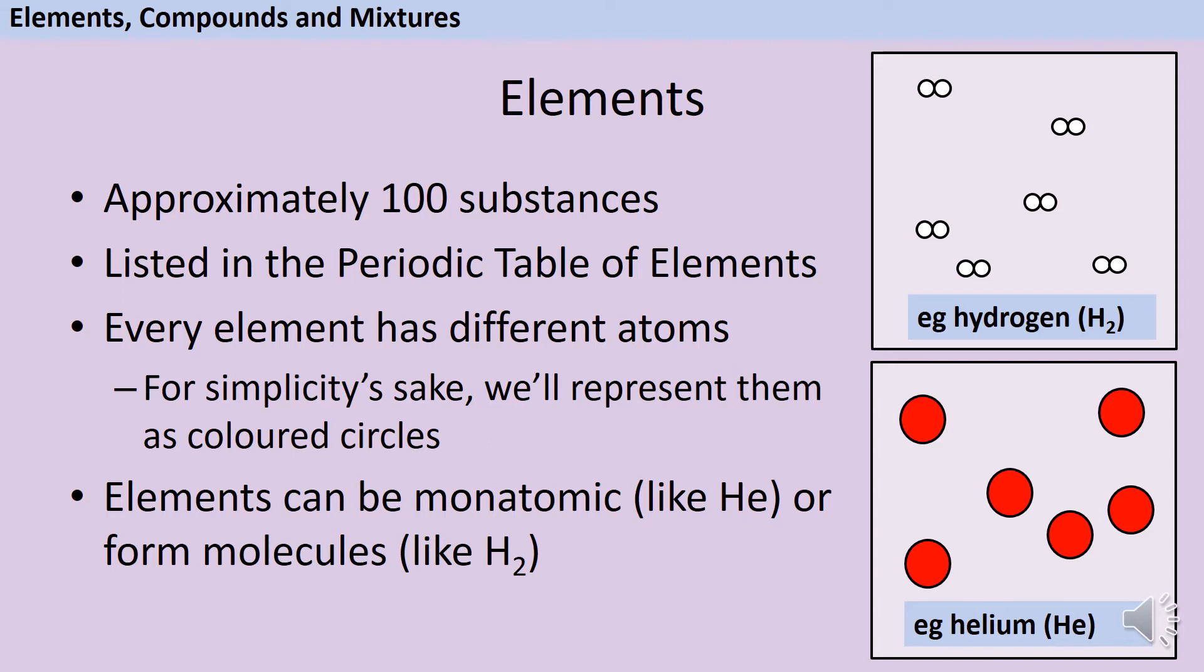We'll learn all about atoms at a later date, but for now let's just say that one part of an atom is called a proton. And if we look at the Periodic Table, the first element has one proton in its atom and then the second element has two protons and the third element has three protons and so on and so forth.